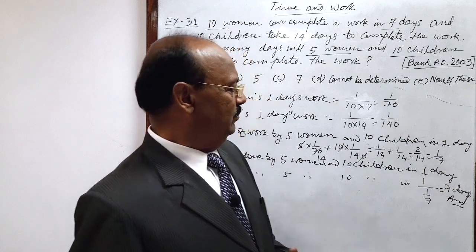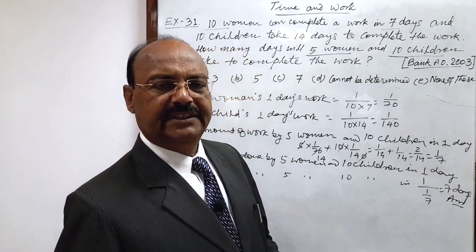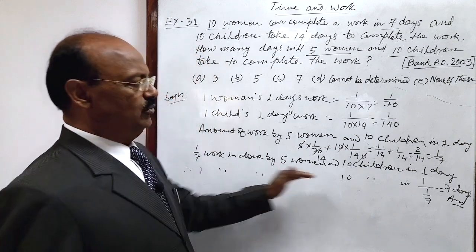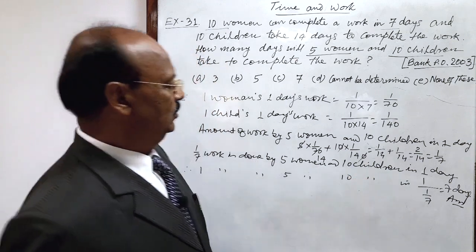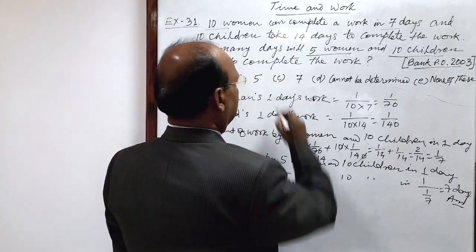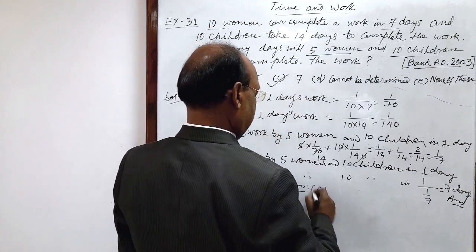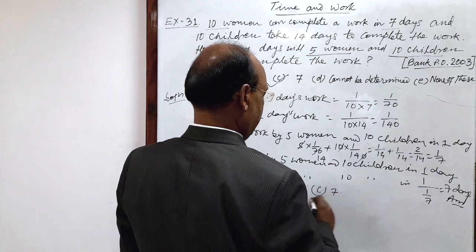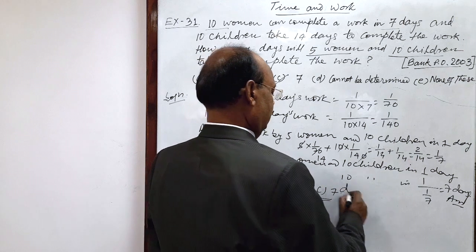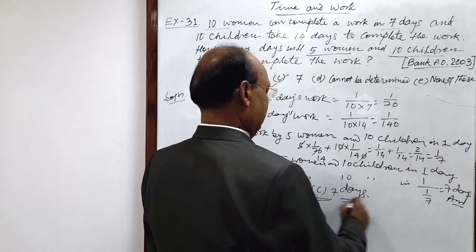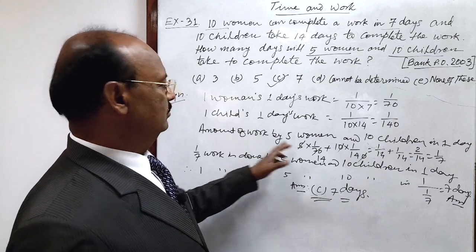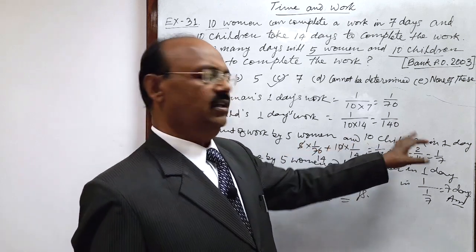In subjective examinations, we can show the unitary method to get the answer. Our correct answer is option C, which is 7. The number of days is 7 days — 7 days are required to complete this work when 5 women and 10 children work together.